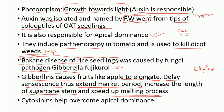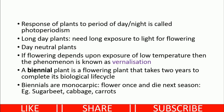Cytokinin helps to overcome apical dominance — it acts against auxin, because auxin causes apical dominance and cytokinin reduces it.